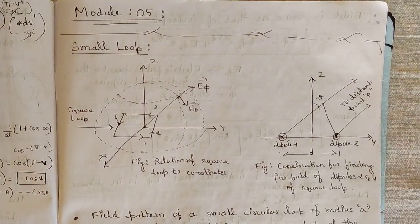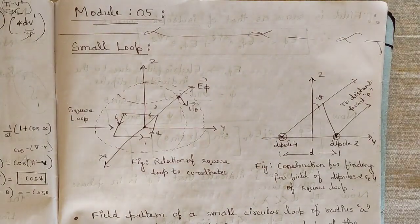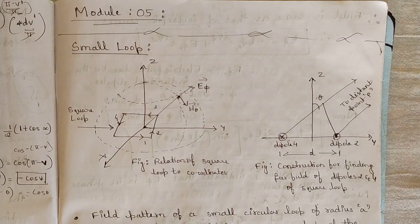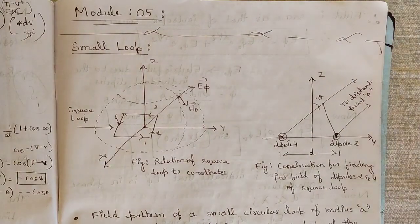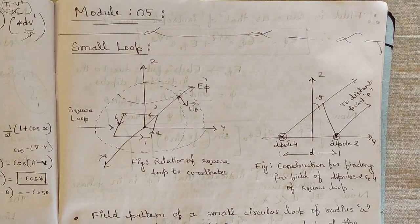Hello everyone, welcome to this new video. In my previous video I discussed module 4, and till now I have covered 4 modules of the subject Microwave Engineering and Antenna Theory. In the previous module we discussed antenna fields and some important parameters related to antenna with respect to their fields, electric and magnetic components, and we saw the relation between them and multiple field patterns generated based on different kinds of antenna.